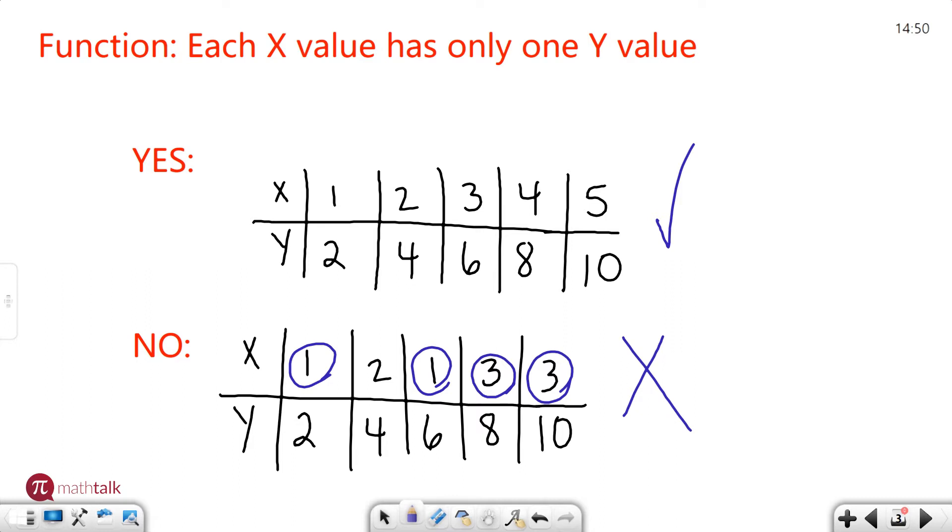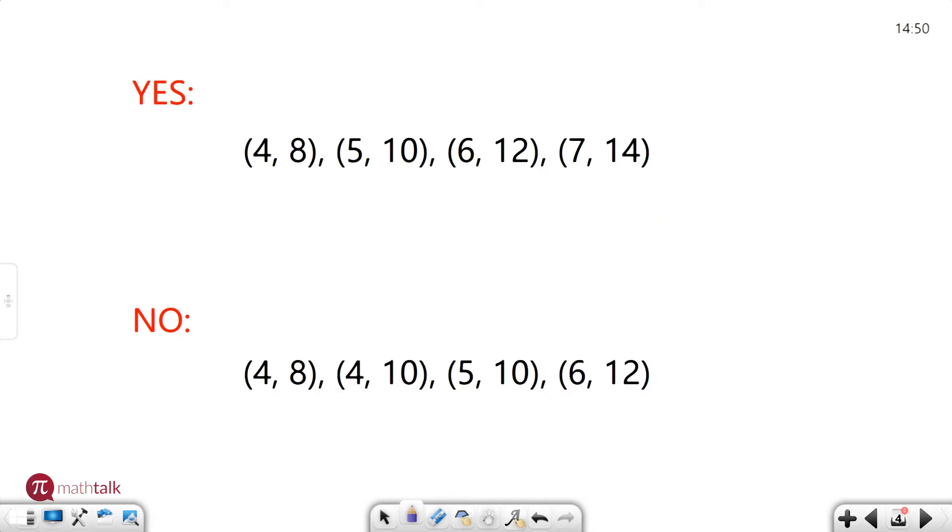So that's one quick trick. Let's look at another set of data. Let's say you have these two sets of ordered pairs. In the first one, you want to look to see, are there any x values that repeat? And remember, in an ordered pair, it's always represented as x comma y.